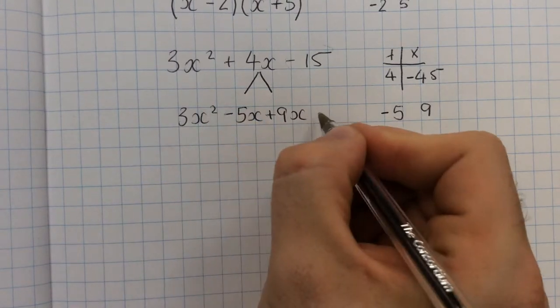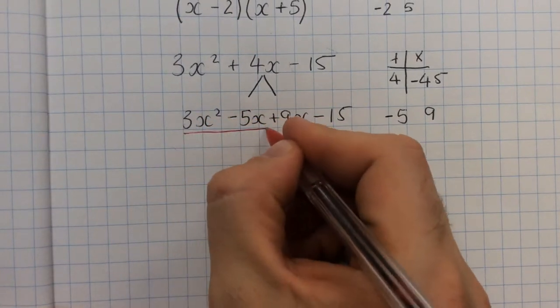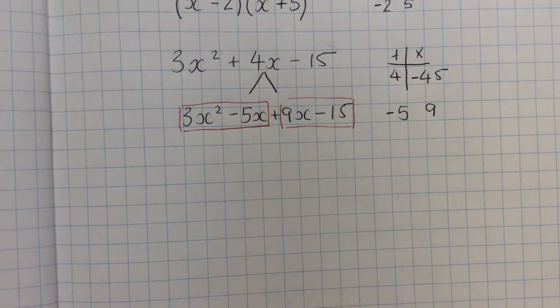3x² is still at the start and minus 15 is still at the end. Then we factorise this twice - we factorise the first half and we factorise the second half using simple factorising.